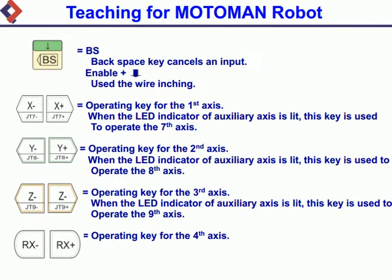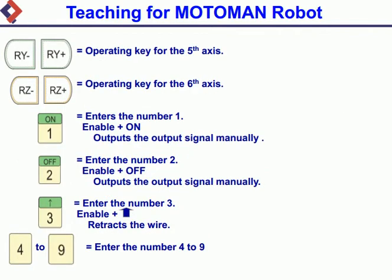Operating key for the 2nd axis: when the LED indicator of auxiliary axis is lit, this key is used to operate the 8th axis. Operating key for the 3rd axis: when the LED indicator of auxiliary axis is lit, this key is used to operate the 9th axis. Operating key for the 4th axis.